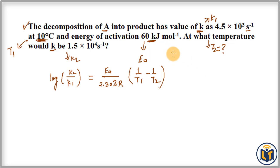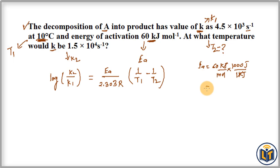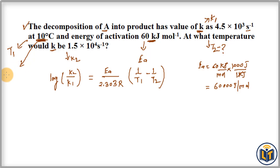Since R is in joules per mole K, we convert the EA value from kJ per mole into joules per mole so the units cancel. EA is 60 kJ per mole; since 1 kJ equals 1000 joules, we get 60,000 joules per mole. The initial temperature is given in degrees Celsius, so we convert it to Kelvin by adding 273: 10 + 273 = 283 K.